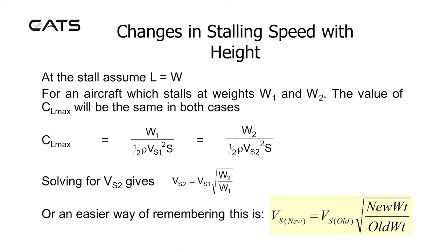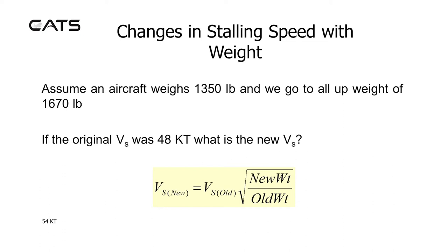At the stall, assume that lift equals weight. For an aircraft which stalls at weights W1 and W2, the value of CL max will be the same in both cases. Solving for stalling speed gives a stalling speed directly related to the square root of the two weights under consideration. An easier way of remembering this is: VS new = VS old × √(new weight / old weight).